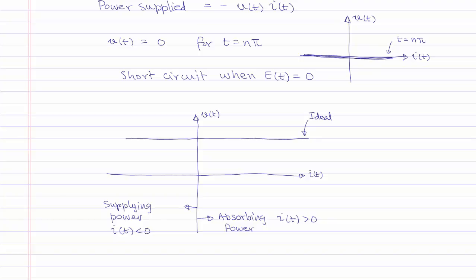An actual source has slightly different characteristics: when it is supplying power, the voltage tends to drop as the magnitude of the current it supplies increases, and the voltage across it increases as it absorbs power. Normally, the value specified for a real voltage source is when the current equals 0, where the real and ideal voltage sources have the same voltage value. A real voltage source can be modeled as an ideal source with some other elements connected to it.